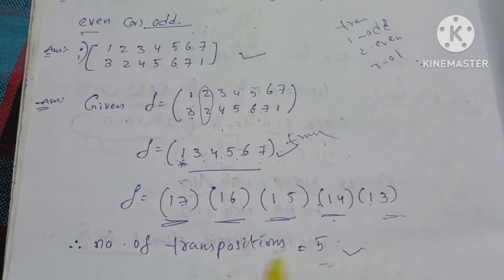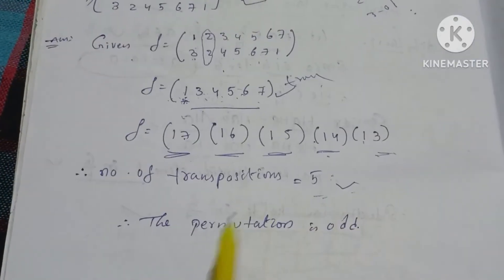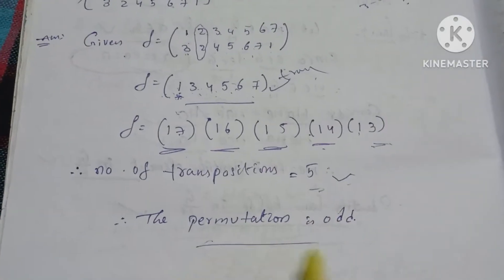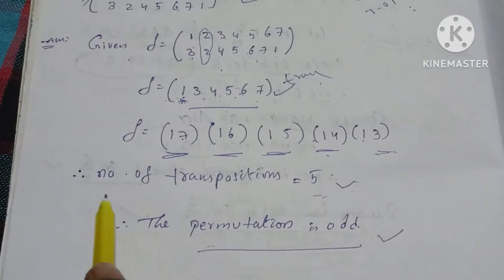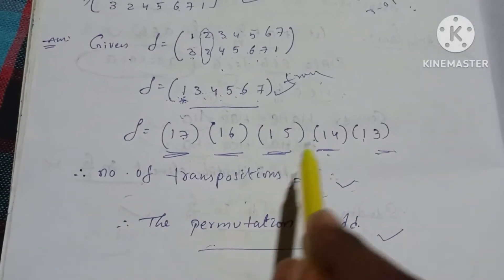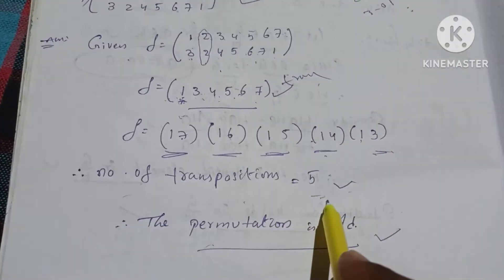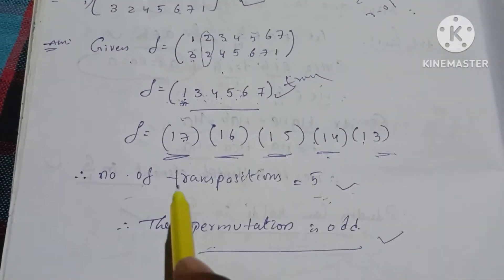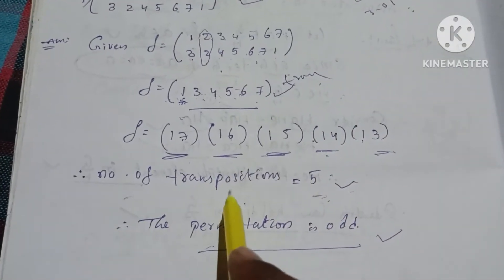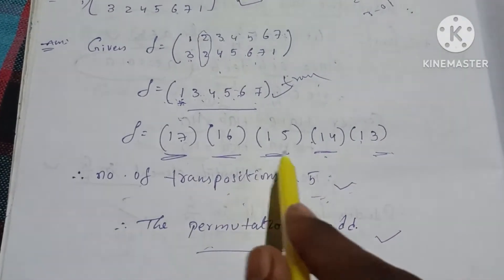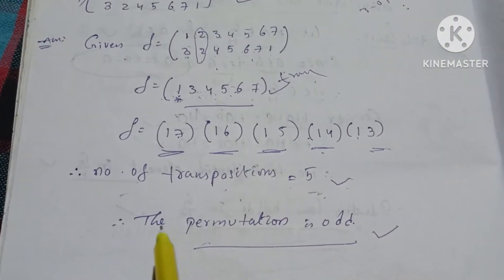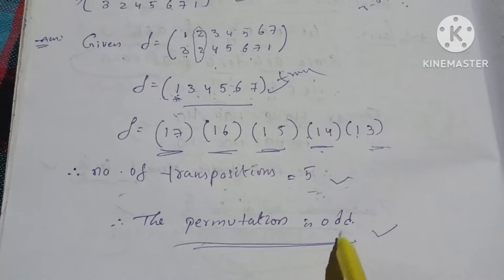So 1, 2, 3, 4, 5. That gives us 5 transpositions — 5 is an odd number. Therefore, the permutation is odd.